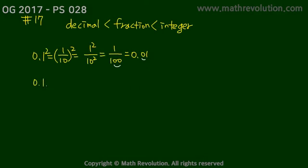Likewise, if you have 0.1 cubed, this is 1 over 10 cubed, and therefore this is 10 to the power of 3 for the denominator and 1 for the numerator. So we get 1 over 1,000, which is equal to 0.001. Since there are three zeros here, we move three points after the decimal point.